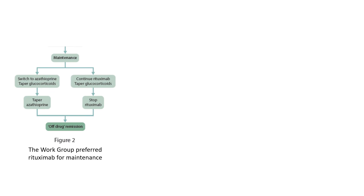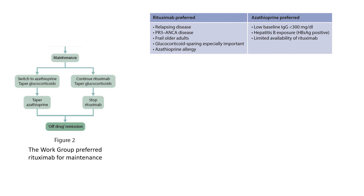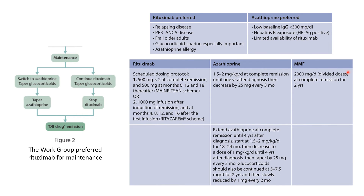Regarding maintenance therapy: maintenance involves switching to azathioprine or continuing rituximab. The KDIGO work group preferred rituximab for maintenance. Rituximab is preferred in relapsing disease, PR3-ANCA disease, and frail older adults for glucocorticoid sparing, or when there is azathioprine intolerance. Azathioprine is preferred when baseline IgG is below 300 mg/dL, when the patient is hepatitis B surface antigen positive, or when rituximab availability is limited.